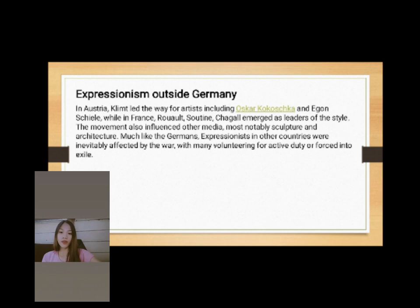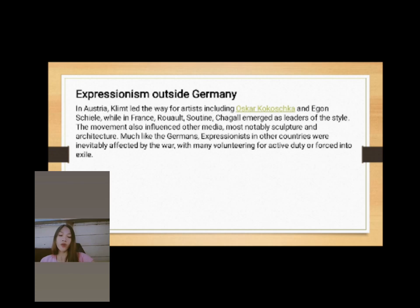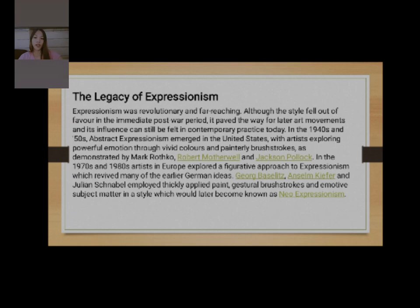Expressionism outside Germany: in Austria, Klimt led the way for artists including Oskar Kokoschka and Egon Schiele, while in France, Chaim Soutine and Marc Chagall emerged as leaders of the style. The movement also influenced other media, most notably sculpture and architecture. Like the German Expressionists, artists in other countries were inevitably affected by the war, with many volunteering for active duty or forced into exile.